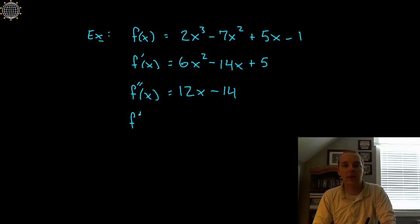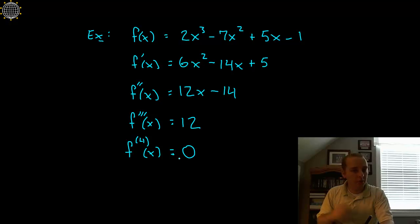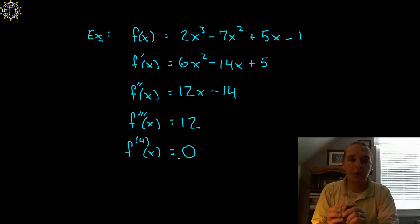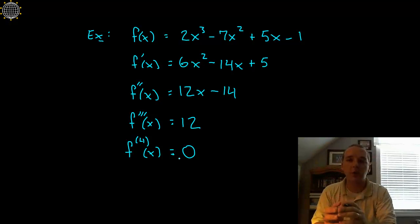If you wanted to take a third derivative you'd get twelve. And if you wanted a fourth derivative, you'd take the derivative of twelve, which is zero. Now a lot of times these derivatives do get smaller, but don't be fooled into thinking they always get smaller.